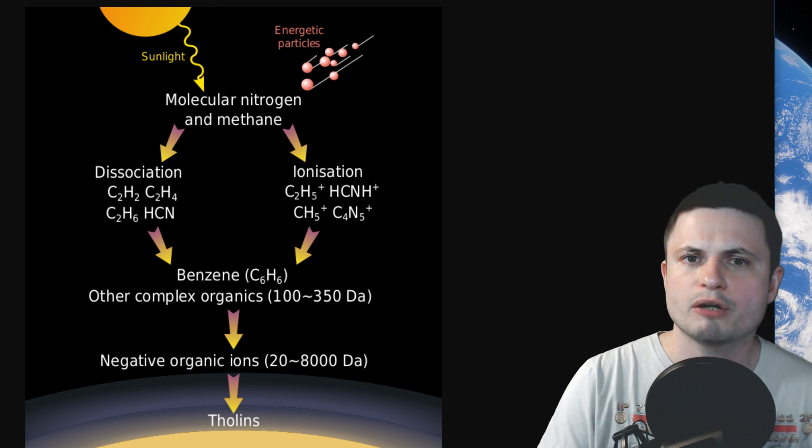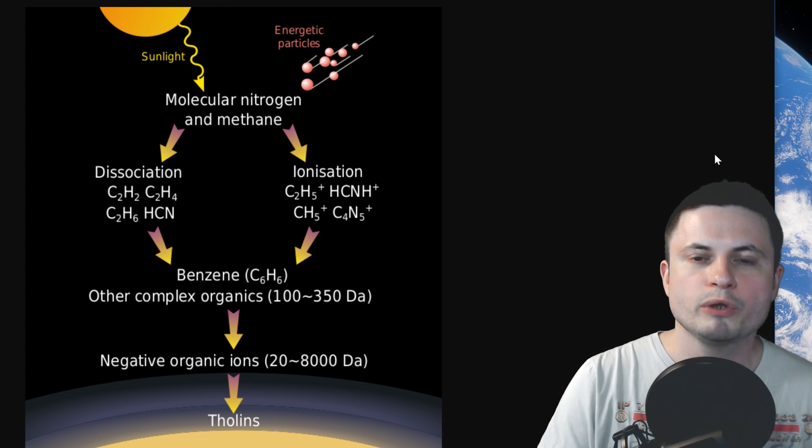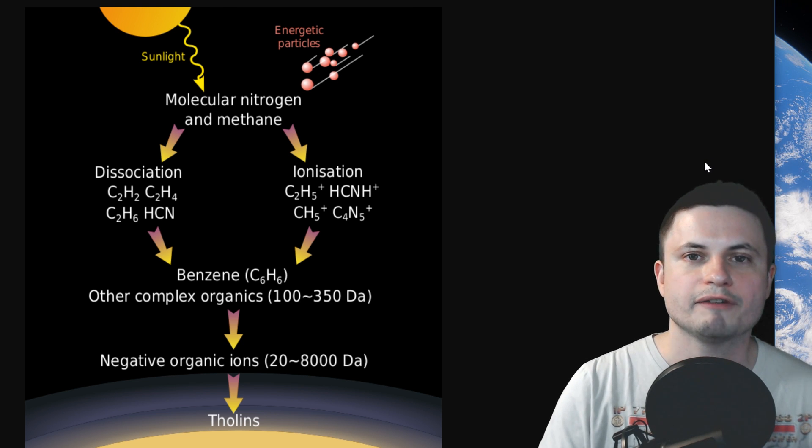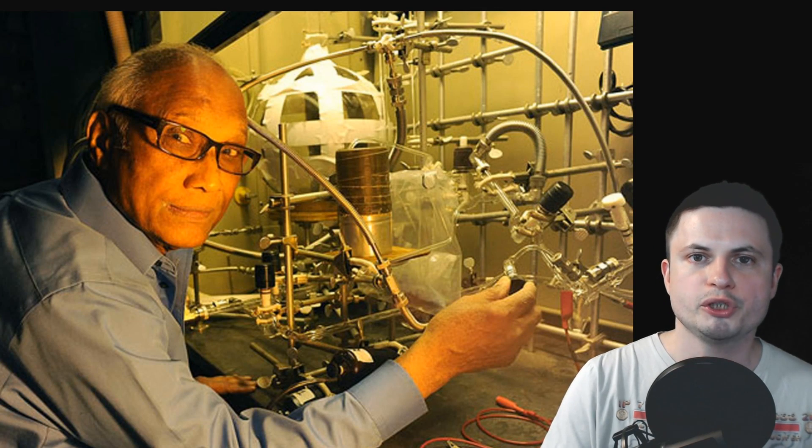And this is kind of how we think it formed on Titan. Now, originally these were named and discovered by the super famous Carl Sagan, who actually performed an experiment with another scientist. This is Kyra Bishun.